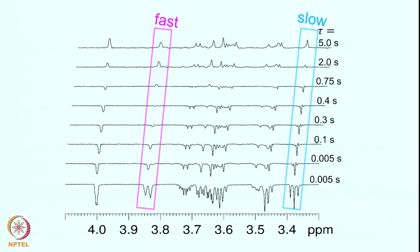Here is an experimental spectrum demonstrating this. The experiments are done at various values of tau: 0.005 seconds, 0.05 seconds, 0.1 seconds, 0.3 seconds, 0.4 seconds, 0.75 seconds, 2 seconds, and 5 seconds. By 5 seconds almost the entire magnetization has recovered but not completely. We can see differences in the recovery rates of the individual spins — one spin is recovering faster than another.